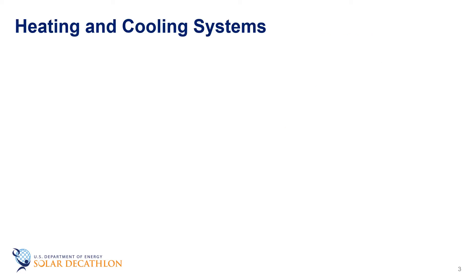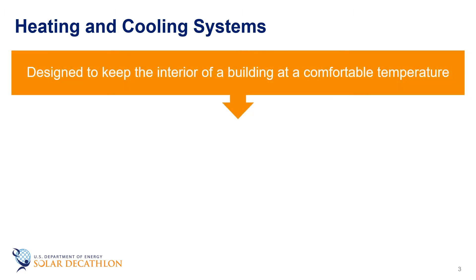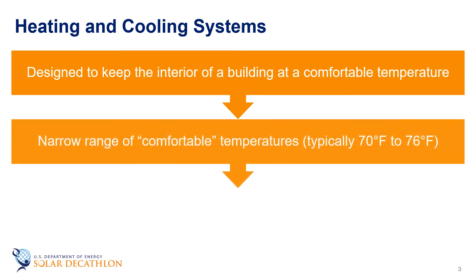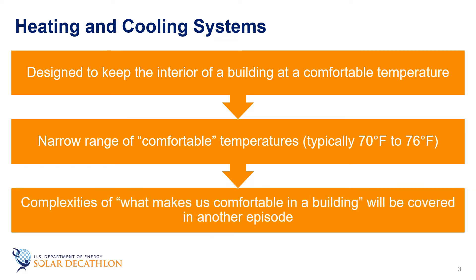The heating and cooling system is designed to keep the interior of the building at a comfortable temperature. The range of temperatures that we are comfortable at is fairly narrow, typically between 70 and 76 degrees Fahrenheit. We will talk more about the complexities of comfort in another episode, but for now we will strive to keep the inside temperature within this narrow band.